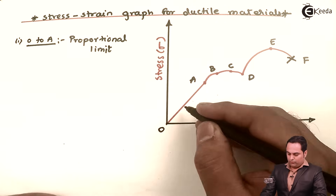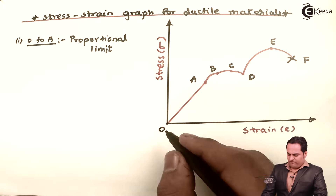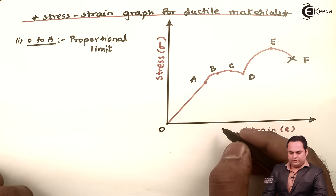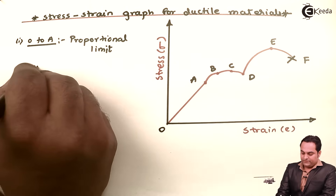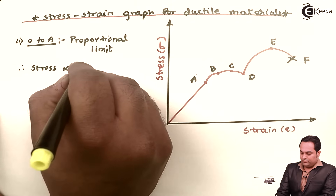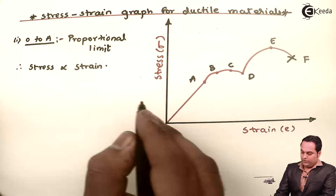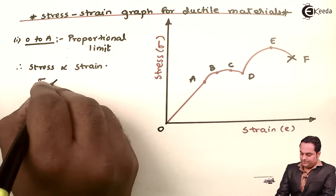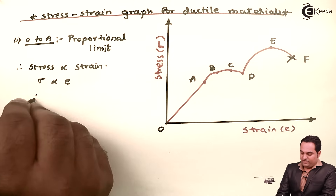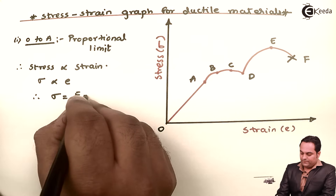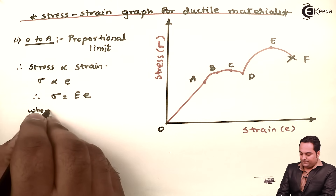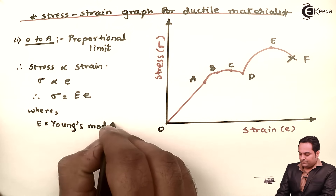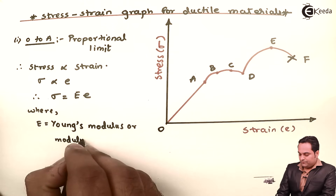From O to A it is the proportional limit, which means if we go on increasing stress, strain will also increase — the relation is directly proportional. Therefore, stress (Sigma) is directly proportional to strain (E). Removing the proportionality sign gives a constant, capital E, called Young's modulus or modulus of elasticity.